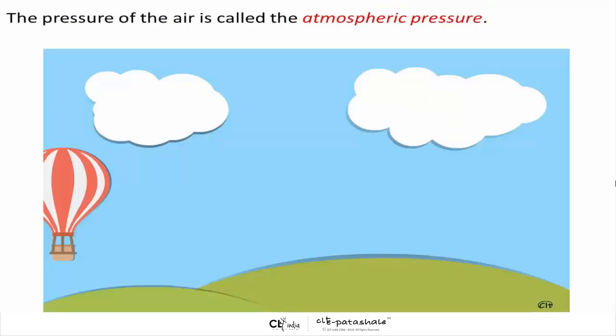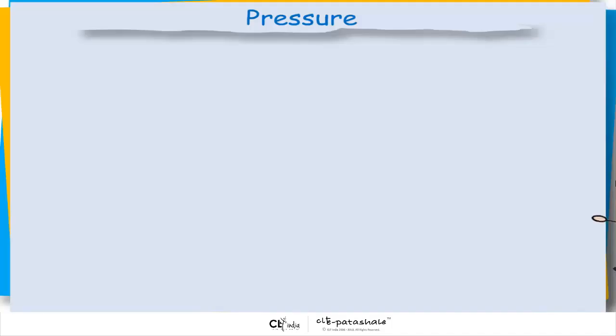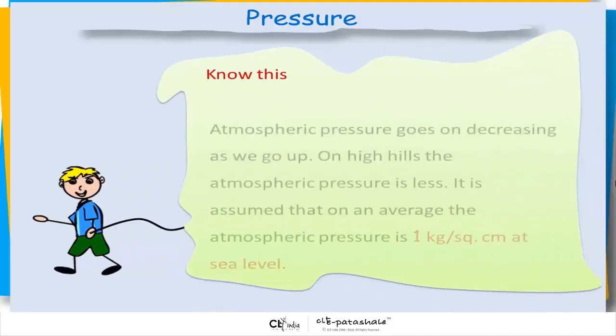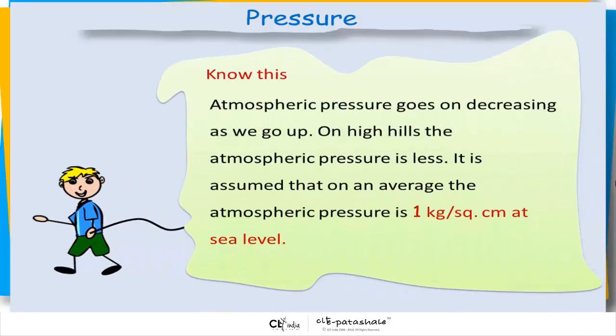The pressure of the air is called the atmospheric pressure. Do you know children, atmospheric pressure goes on decreasing as we go up. On high hills the atmospheric pressure is less. It is assumed that on an average the atmospheric pressure is 1 kg per square centimeter at sea level.